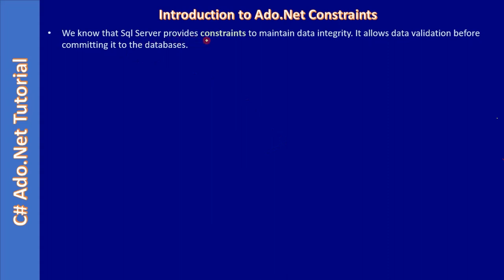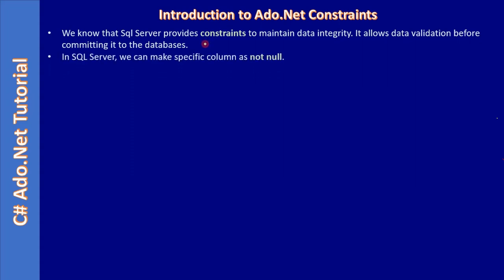SQL Server provides constraints to maintain data integrity. In this course we are learning about ADO.NET keeping SQL Server as the back-end. SQL Server exposes data integrity via constraints and allows data validation before committing to the database. In SQL Server we can make a specific column not null, meaning the column contains a not null constraint.